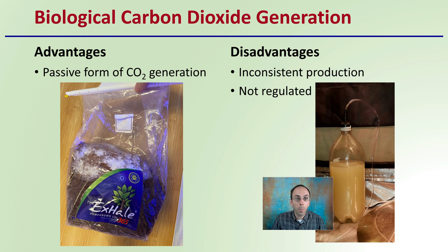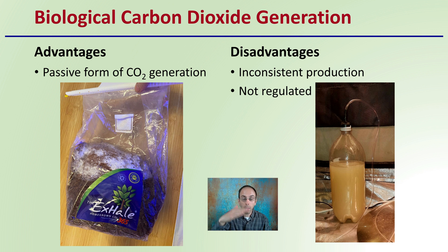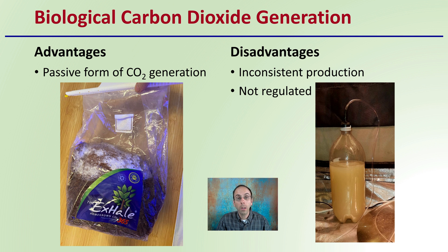Lastly, there are biological carbon dioxide generation sources as well. The advantage is it's a passive form of carbon dioxide generation and tends to be pretty easy. The disadvantage, though, is it's an inconsistent production — these are biological systems that need to be fed, and they might produce more one day and less another day, and are also temperature dependent. It's also a not-regulated form of carbon dioxide, meaning you could get a lot in one area and not a lot the next day.